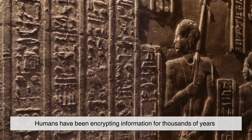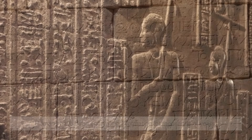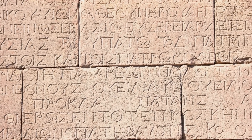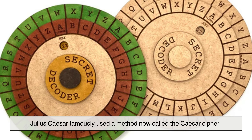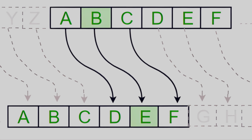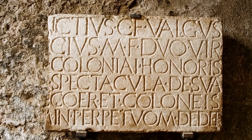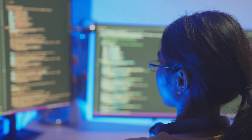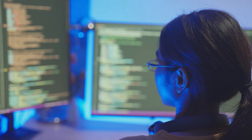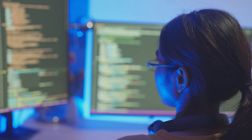Humans have been encrypting information for thousands of years. One of the earliest known examples comes from ancient Rome. Julius Caesar famously used a method now called the Caesar cipher. He would shift each letter in a message by a fixed number of places in the alphabet. To anyone who didn't know the shift, the message looked meaningless. To someone who did, it was easy to decode. While this method is laughably insecure by modern standards, it demonstrates the basic idea that still applies today: secrecy through transformation.